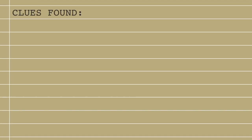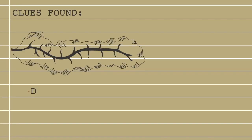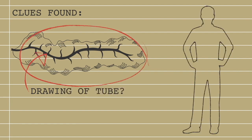It happens that in the year before he was murdered, Professor Wiersung discovered a tube in the centre of an organ which was previously believed to only function as padding in the abdominal area. It was, of course, the pancreas.